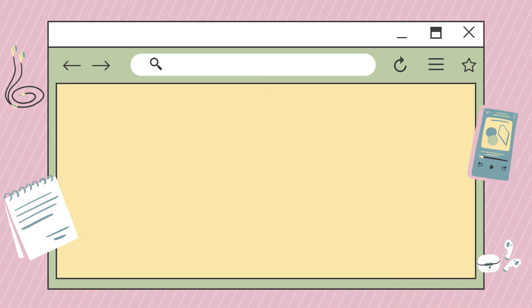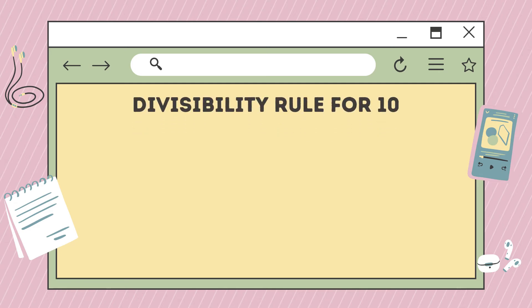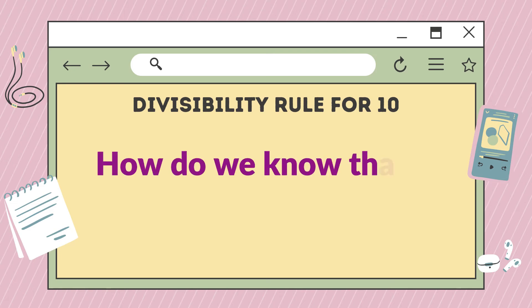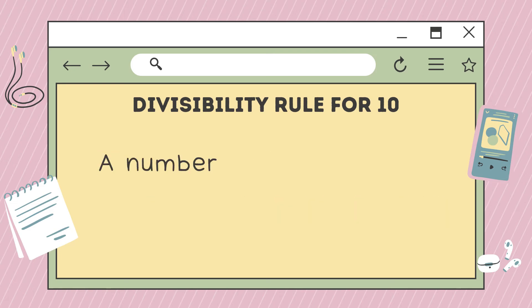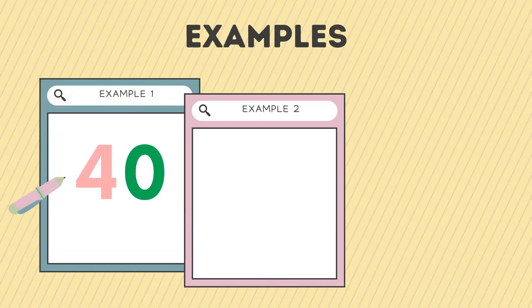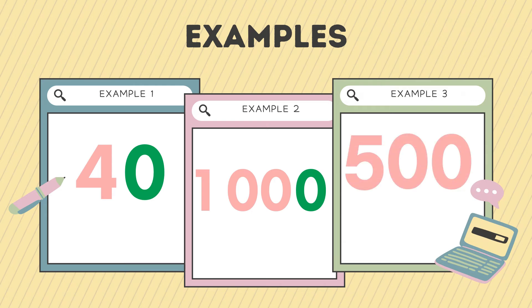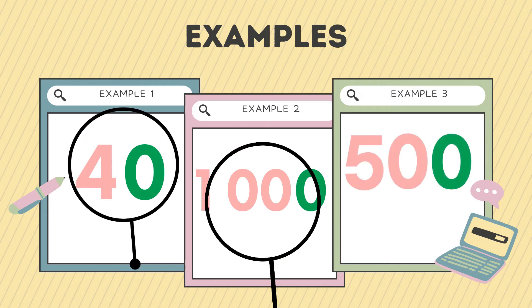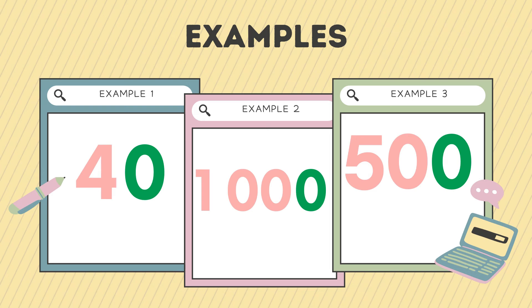Last but not least, we're going to study the divisibility rule for ten. A number is divisible by ten if it ends with zero. For example, 40, 1,000, and 500 are ending with zero — therefore 40, 1,000, and 500 are all divisible by ten.